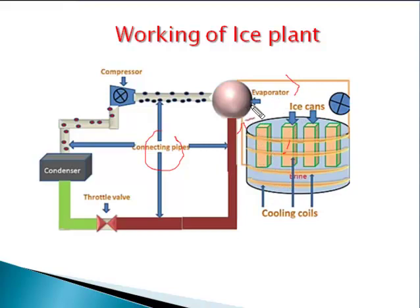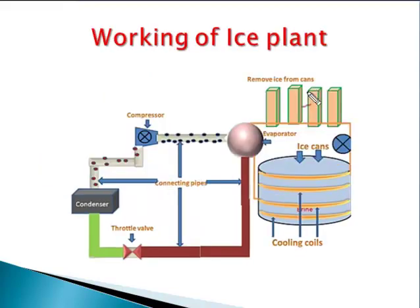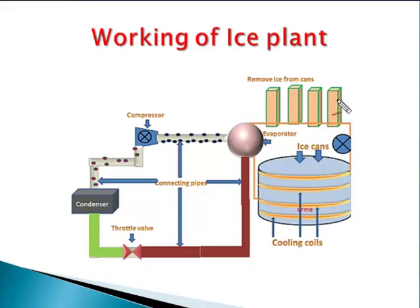This is the basic difference which is used in the ice plant. After the formation of ice, the ice can is removed from the brine solution in the chilling tank. Then the ice is taken out from the ice cans, fresh water is filled into the ice cans, and they are replaced back into the brine solution in the chilling tank for the next formation of ice. This is the final product we get from this plant — ice cubes.